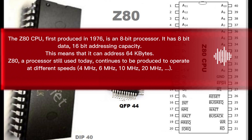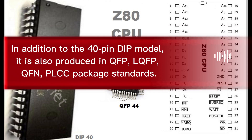The Z80 is a processor still used today, and continues to be produced to operate at different speeds: 4 MHz, 6 MHz, 10 MHz, and 20 MHz. In addition to the 40-pin DIP model, it is also produced in QFP, LQFP, QFN, and PLCC package standards.